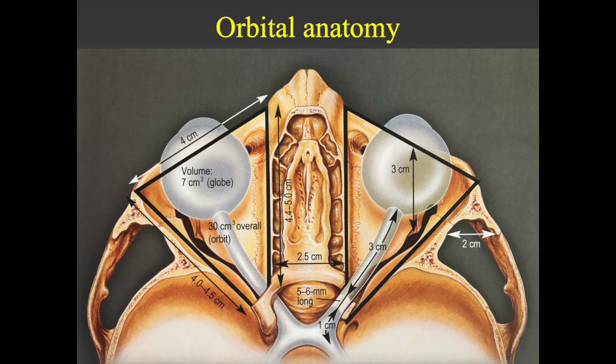The orbit is like a pyramid which has its lateral walls placed at approximately 90 degrees to each other and the medial walls parallel. The orbit has a volume of 30 cc's, within which the globe, a 7 cc structure, lies in its anterior part.